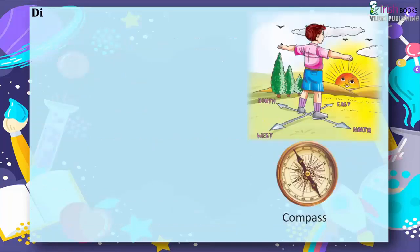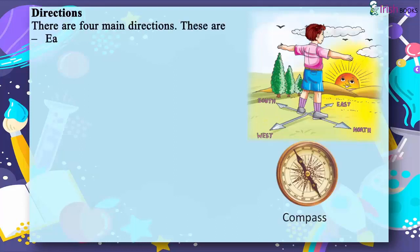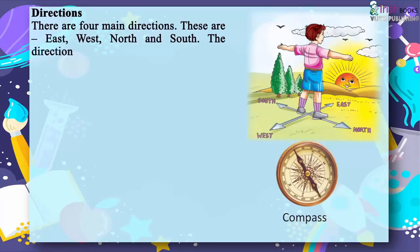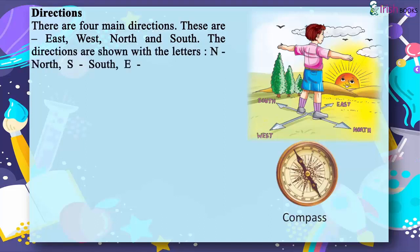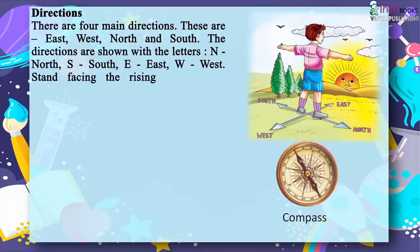Directions. There are four main directions: East, West, North, and South. The directions are shown with the letters N (North), S (South), E (East), and W (West).